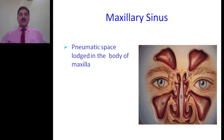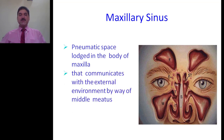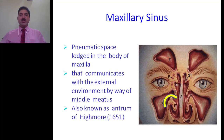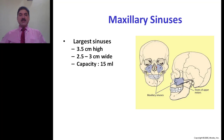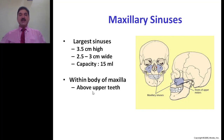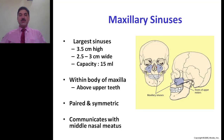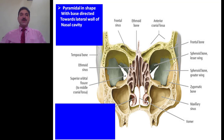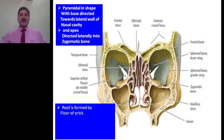Maxillary sinus: it is a pneumatic space lodged in the body of the maxilla that communicates with the external environment by way of the middle meatus. It is also known as the antrum of Highmore. Maxillary sinuses are the largest paranasal air sinuses. Their height is 3.5 cm and their width is 2.5 to 3 cm. Average capacity of maxillary sinuses is 15 ml. These sinuses lie within the body of the maxilla above the upper teeth. Maxillary sinuses are paired but asymmetric. Both maxillary sinuses open into the middle meatus of the nose. Maxillary sinuses are pyramidal in shape with the base directed towards the lateral wall of the nasal cavity, and an apex directed laterally into the zygomatic bone. The roof of the maxillary sinus is formed by the floor of the orbit, so the roof separates the maxillary sinus from the orbit.